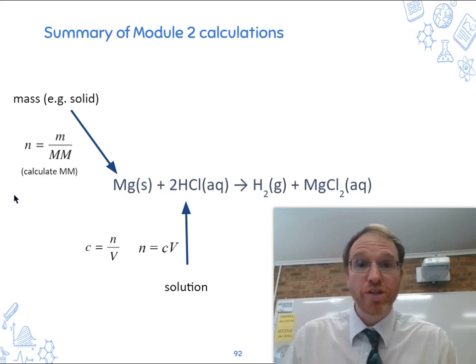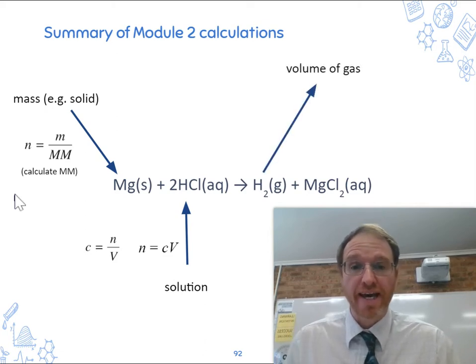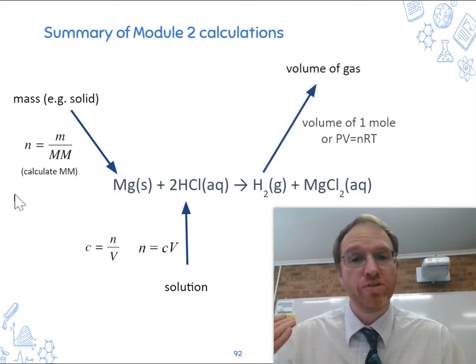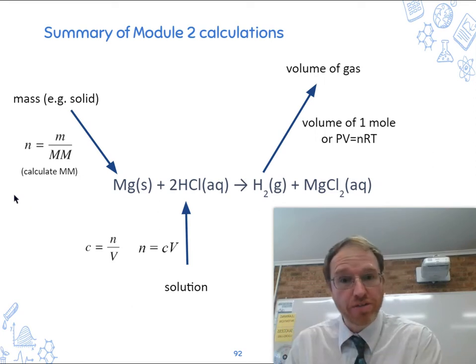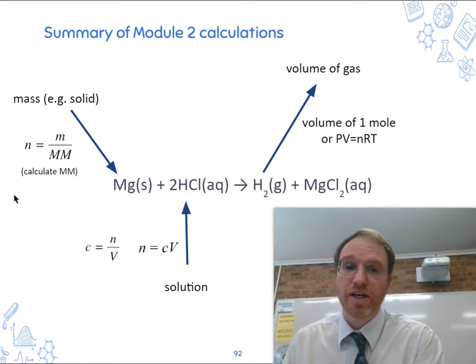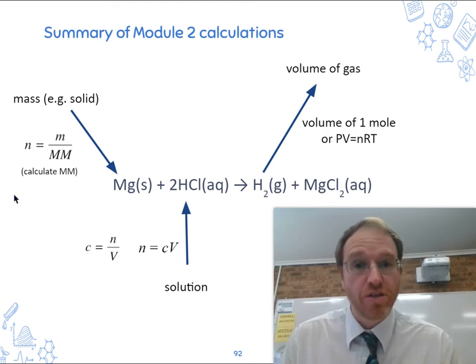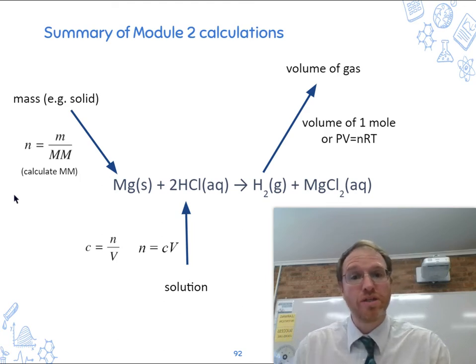The reaction could also involve gases. So how do we find out number of moles if a gas is involved? We use either the volume of one mole of an ideal gas, like at 25 degrees Celsius, 24.79 litres, or at zero degrees. So you can use that or you use PV equals nRT.